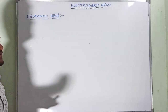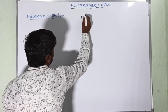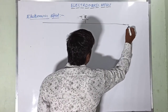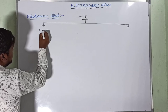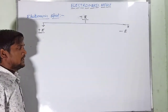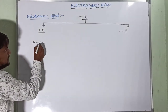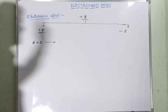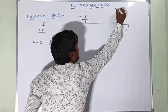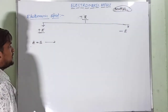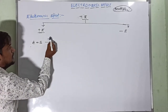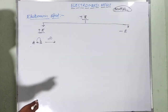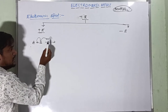The electromeric effect (E effect) is classified into two types: +E effect and −E effect. Consider A=B as a multiple bond — this effect is observed only in the presence of multiple bonds, not single bonds, so it applies to unsaturated compounds. In the presence of H⁺, the two electrons shift towards the more electronegative atom, making it negative, which then attracts H⁺.